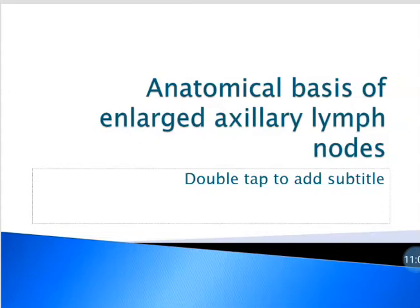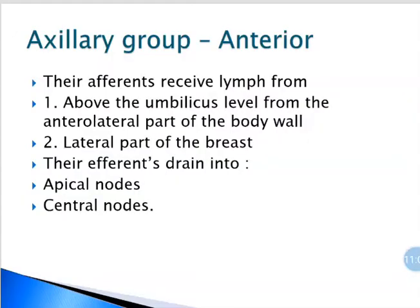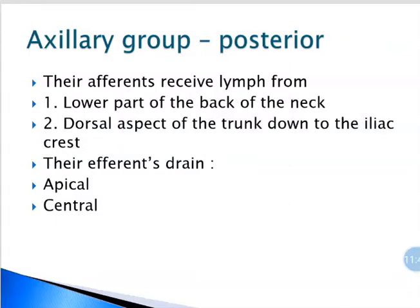The anatomical basis for enlarged axillary lymph nodes: for the anterior group, their afferents are from above the level of the umbilicus, that is the antero-lateral part of the body wall, including the lateral part of the breast. The efferents of this group go to both apical and central nodes. For the posterior group, the efferents they receive are from the lower part of the back of the neck, the dorsal aspect of the trunk down to the level of the iliac crest, and their efferents go to apical and central lymph nodes.